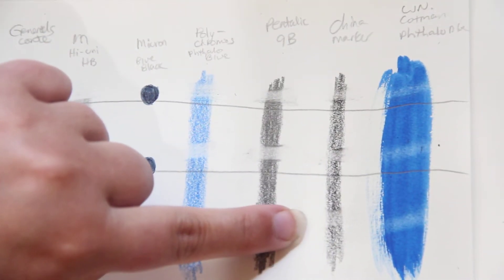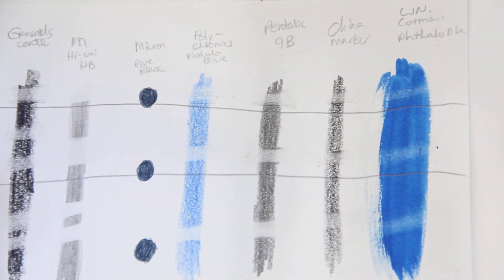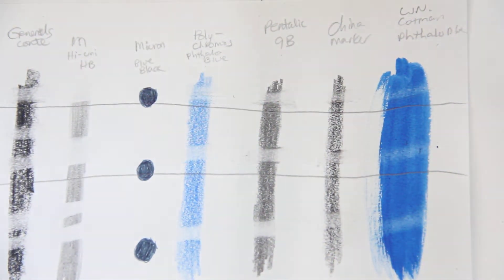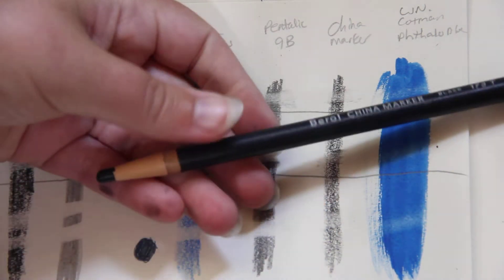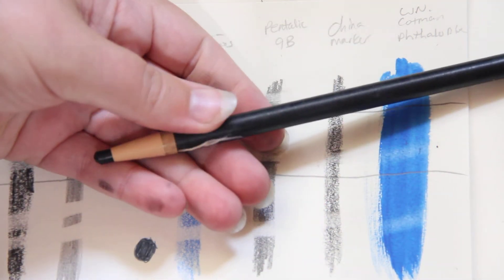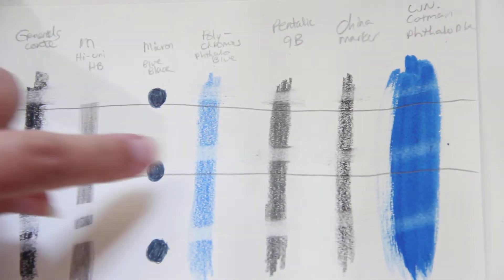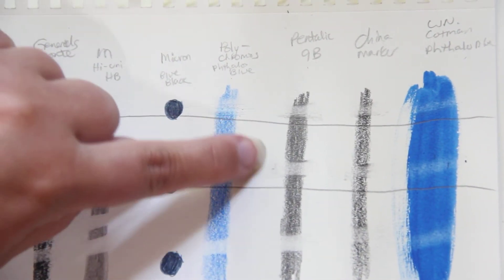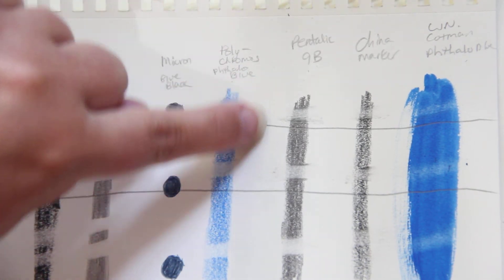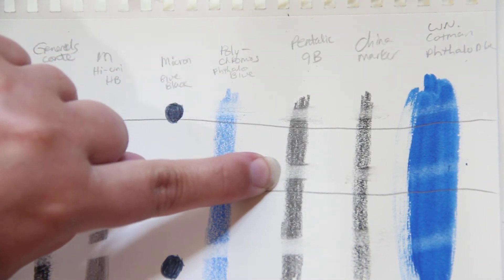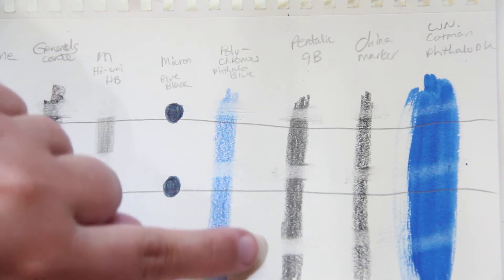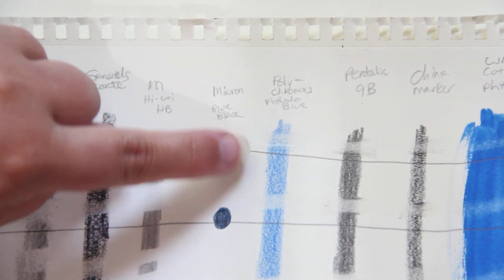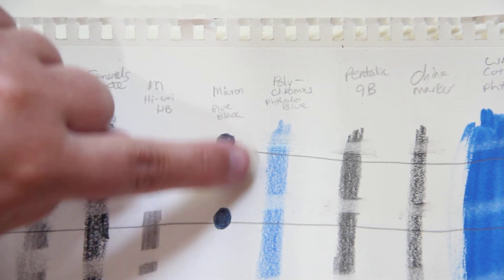Here's the china marker. That's just, it's a wax based, where you unravel it with a string. Here's my woodless 9B. And you can see they really struggled to lift. The high polymer did better. The same with the polychromos. They really struggled.